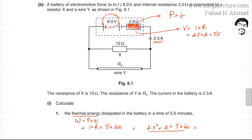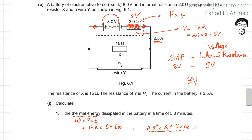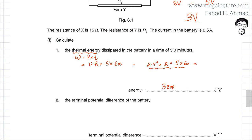If the EMF provided by the battery is 8 volts and there is a 5 volt drop across the internal resistance, then the net terminal potential difference is 8 minus 5, which equals 3 volts. This is the voltage that the external circuit sees at the terminals.